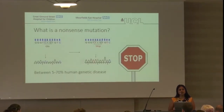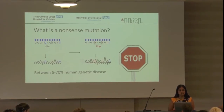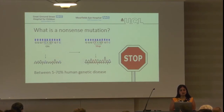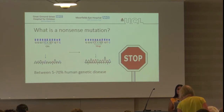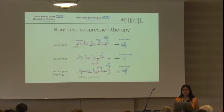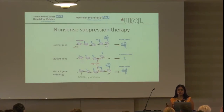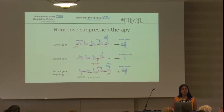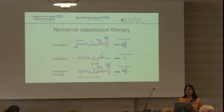To start with, I'm going to quickly go over what a nonsense mutation is. This is a single change in a letter in your genetic code within an instruction part of the gene that leads to the introduction of an abnormal stop signal. These are actually quite common mutations — they can account for up to 70% of human genetic disease. When your protein-making machinery hits that abnormal stop signal, it just stops, and you end up with shortened, non-functional protein. This is what ultimately leads to the disease process.